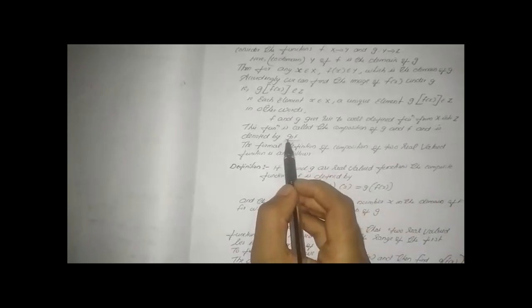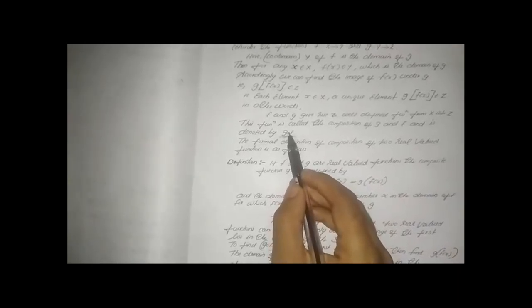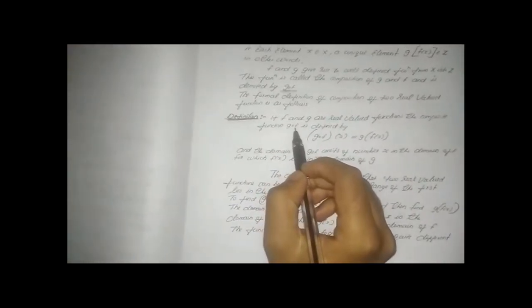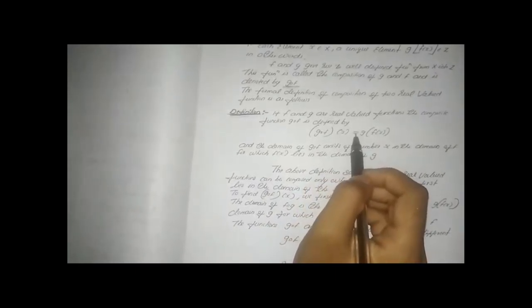This function is called the composition of g and f and is denoted by g∘f. The formal definition: if f and g are real-valued functions, the composite function g∘f is defined by (g∘f)(x) = g(f(x)). The domain of g∘f consists of all numbers x in the domain of f for which f(x) lies in the domain of g.